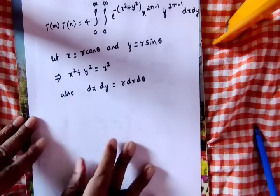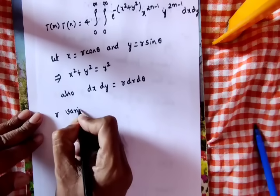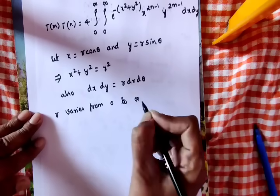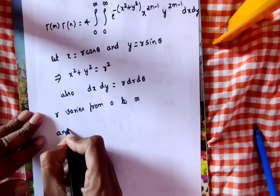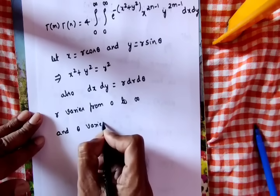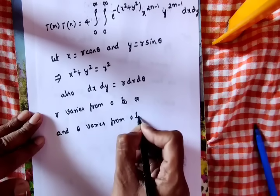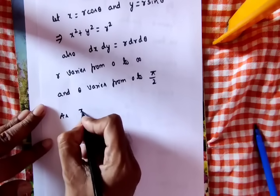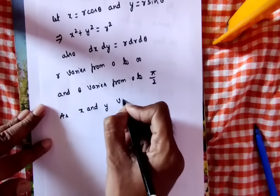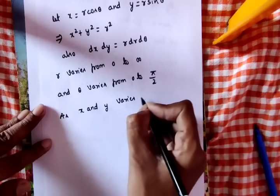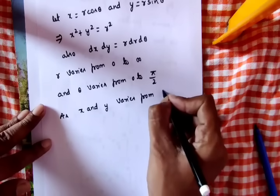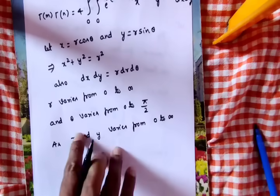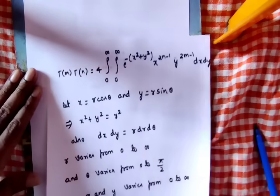As x and y vary from 0 to infinity, r varies from 0 to infinity and theta varies from 0 to pi/2.